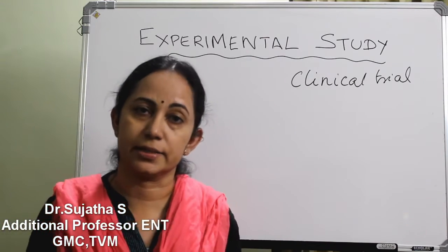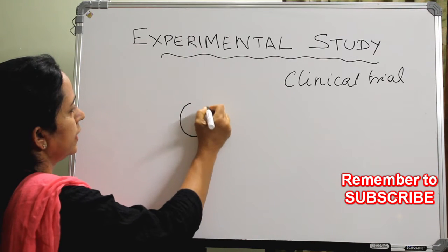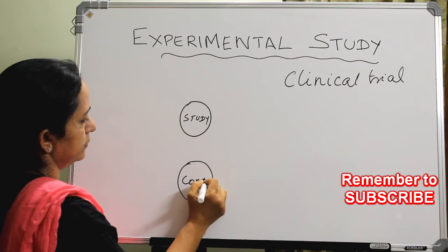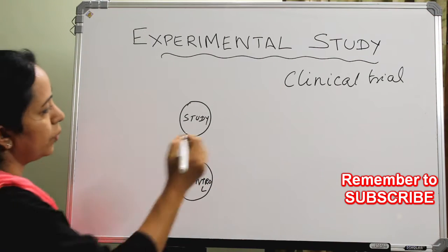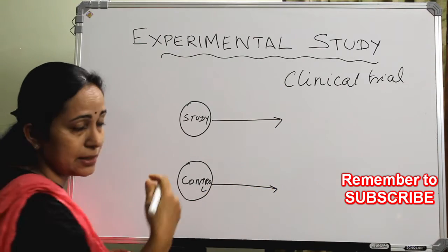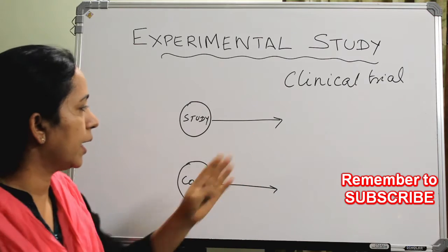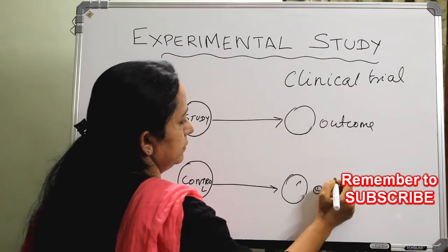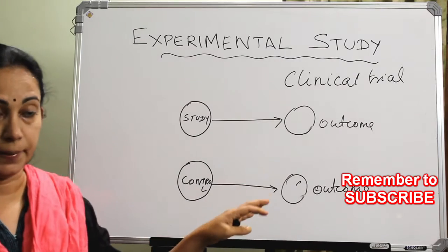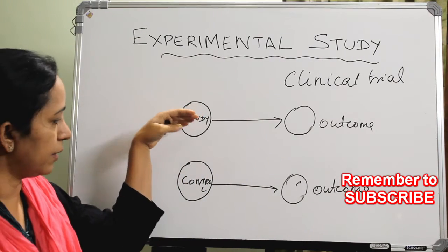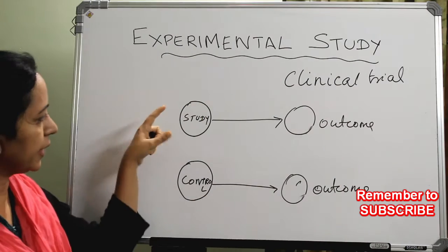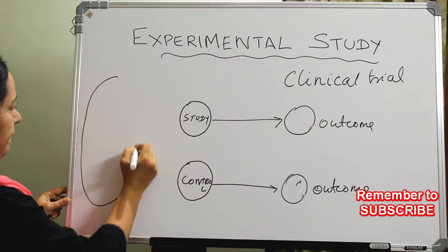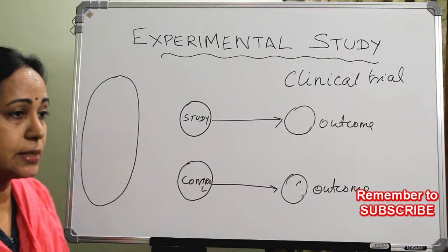That is the basic thing we are doing in a clinical trial. There will be a study group and a control group or comparison group. Both are followed up using the same method and same regime, looking for the outcome. These outcomes are compared to find out whether the effect in the study group is better than that in the control group. We get this study and control group from the population — either those suffering from the disease or the population at risk.